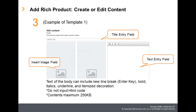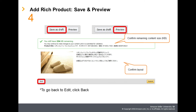Text of the body can include new line break, bold, italics, underline, and itemized decoration. HTML code cannot be used, so please do not input. Also, to keep the product detail pages from becoming too heavy, keep contents under 250 kilobytes. If taking a break while working, it is possible to save it as a draft by clicking Save as Draft.